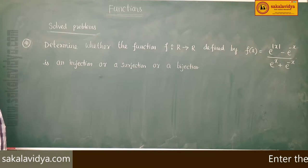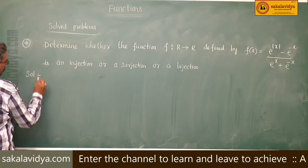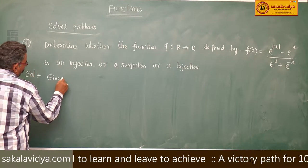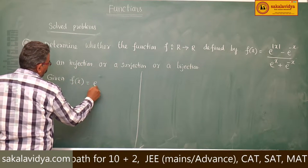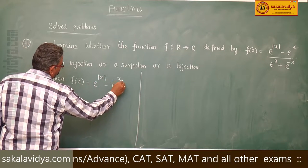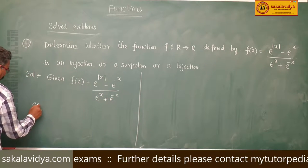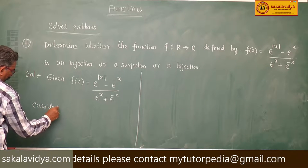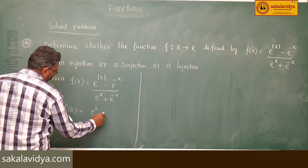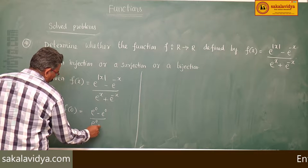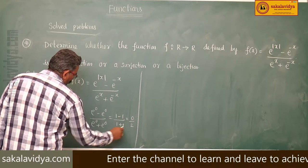First, let us check whether it is an injection. The function is f(x) = (e^|x| - e^(-x)) / (e^x + e^(-x)). Consider f(0): this is (e^0 - e^0) / (e^0 + e^0) = (1 - 1) / (1 + 1) = 0/2, which equals 0.